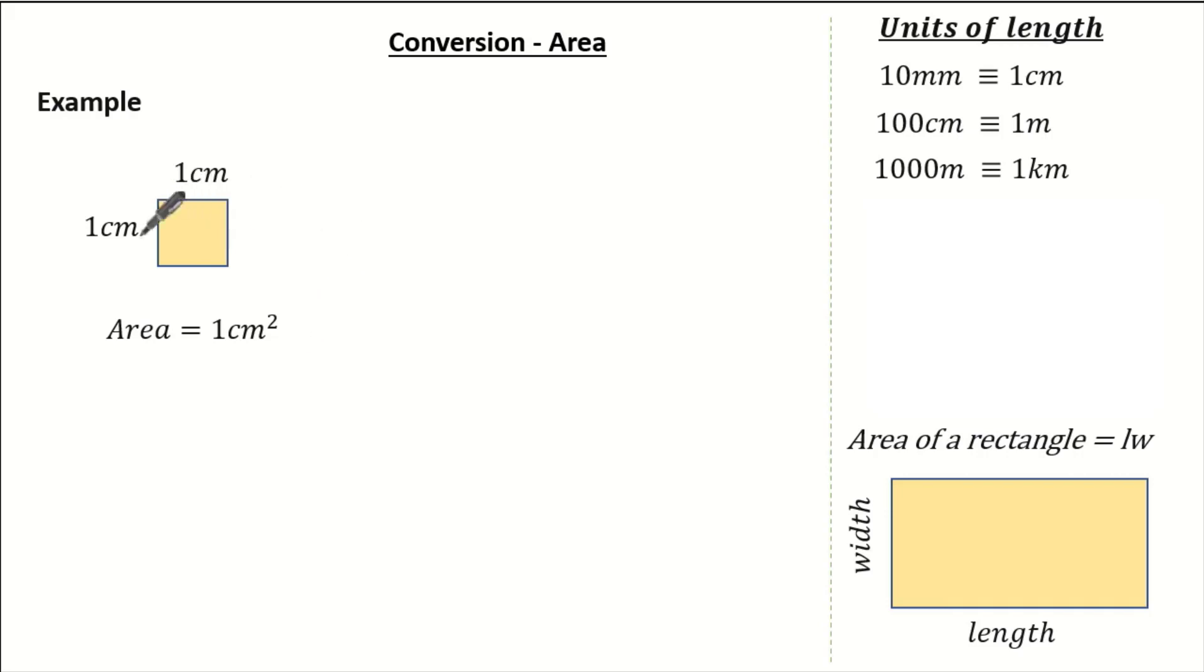Now converting these units, I'm going to use millimeters. So that means I know 1cm is the same as 10mm. Look at the area. The area is 10 times 10, which is 100mm squared.